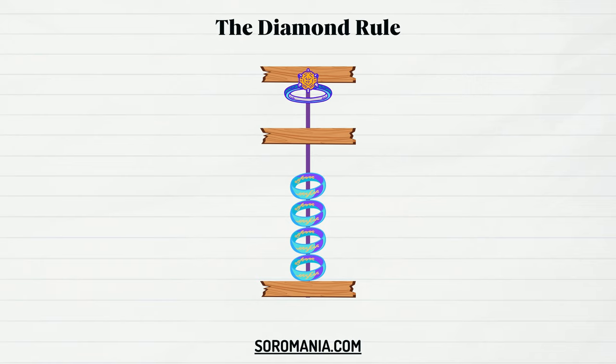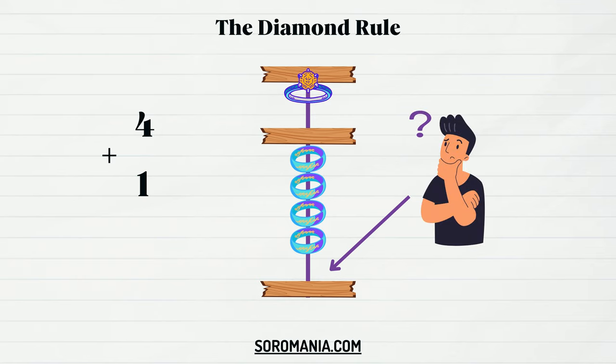Assuming we have this operation: 4 plus 1. Activate 4 lower beads. Then add 1 lower bead. Wait. There's no lower bead to add. What should I do?